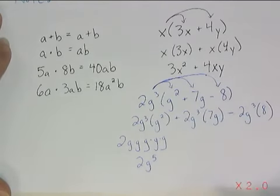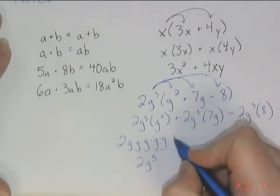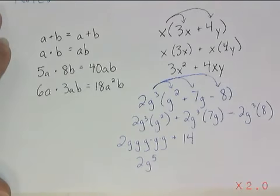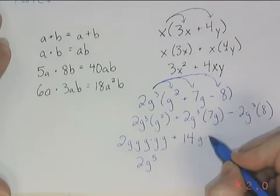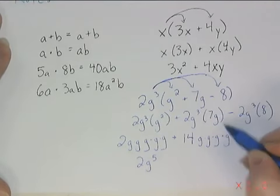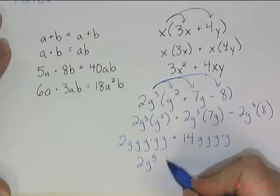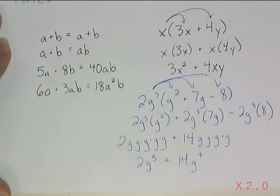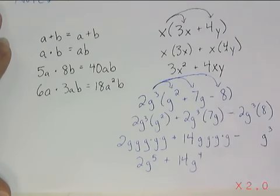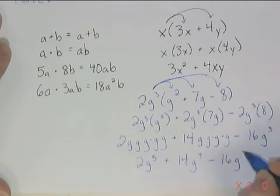Multiplying the next two terms together — coefficients always go to the front. So this 7 is going to multiply by this 2 to give us 14. g to the third power in expanded form multiplied by this g gives us 14g to the fourth power. Last but not least, this one is a little bit easier since we don't have any g's in the last term. So I know that term is going to have g to the third power, and 2 times 8 gives us the coefficient of 16. So minus 16g to the third power.